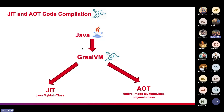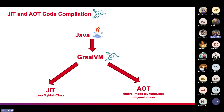When using GraalVM, you're not limited to AOT only — you can use either JIT or AOT. The basic difference: JIT (just-in-time) compilation is done at runtime, whereas AOT (ahead-of-time) compilation is done at build time. This is the very fundamental difference between JIT and AOT.